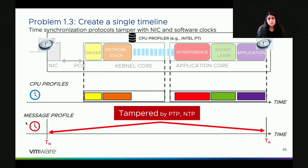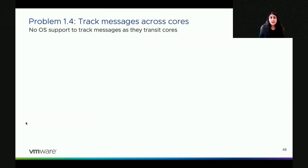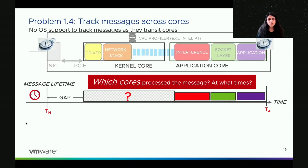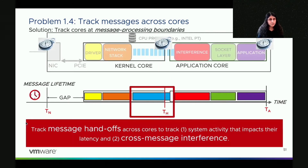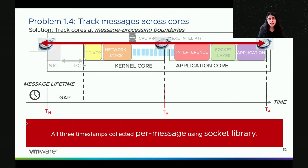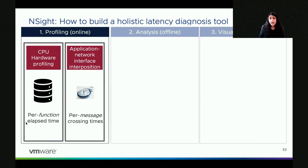We can read the paper to find out how we solve this clock synchronization problem, though with the clock synchronization work presented earlier today, it can possibly be remedied more elegantly. That brings me to the final challenge for profiling: tracking messages across cores. The operating system does not help track the passage of messages across cores, so we can't tell which system activity on the cores impacted message lifetimes unless we track this information. We gather additional timestamps and core information at message processing boundaries between the kernel and the application. When we do so, we're able to track not only system activity, but also cross-message interference and head-of-line blocking, because we know all messages processed by every core within the span of message lifetimes. We collect all three timestamps for each message using the socket library.